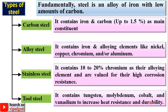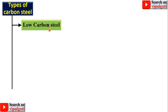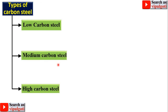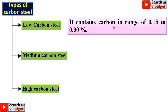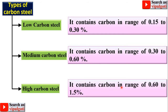Now let's see each type in detail. For carbon steel, there are three subtypes. Low carbon steel contains carbon in the range of 0.15 to 0.30 percent. Medium carbon steel contains carbon in the range of 0.30 to 0.60 percent. High carbon steel contains carbon in the range of 0.60 to 1.5 percent.